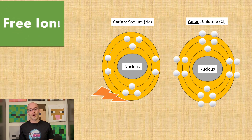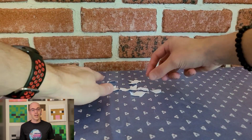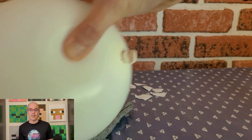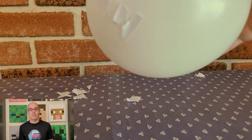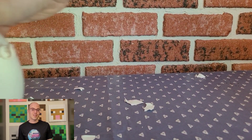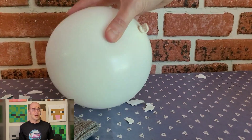Free ions, in the context of conductivity, are charged particles that are not bound within the structure of a material. In conductive materials, such as metals or electrolytes, free ions play a crucial role in facilitating the flow of electric current. In metals, free electrons are responsible for conducting electricity. In electrolytes, such as salt water or solutions of ions, both positive and negative ions can move freely in response to an electric field, enabling the material to conduct electricity.